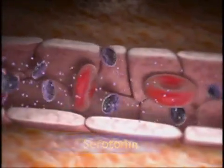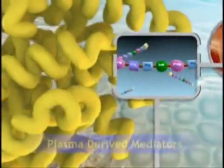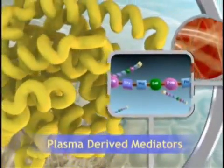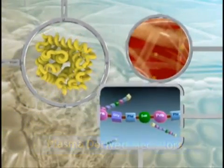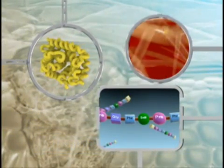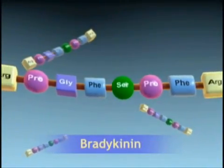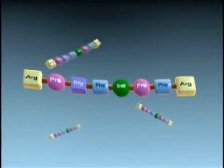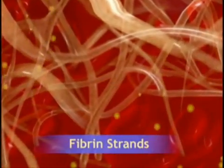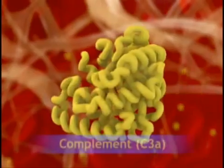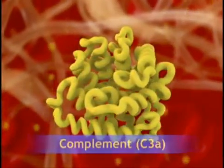Histamine is released in response to a variety of stimuli and causes dilation and increased permeability of capillaries. Serotonin, another cell-derived mediator, performs similar actions. The three major plasma-derived mediators are present in the plasma in precursor forms that must be activated, usually by a series of proteolytic enzymes. The kinins increase capillary permeability and stimulate pain receptors. The clotting system traps exudates, microorganisms, and foreign bodies. The complement cascade causes vasodilation, promotes leukocyte chemotaxis, and augments phagocytosis.